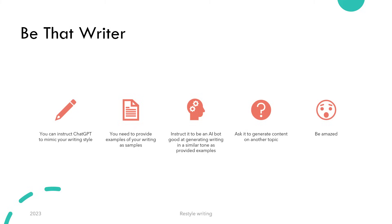You can even become that famous author by instructing ChatGPT to assume the role of an AI bot good at generating writing in a similar tone as provided examples. Then you provide some of your own writing as examples and ask it to generate content on another topic. See if it generates content similar to your writing style.